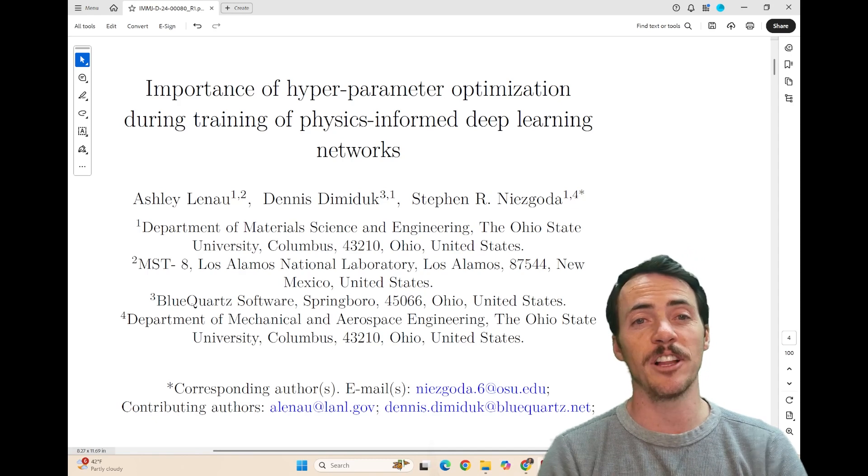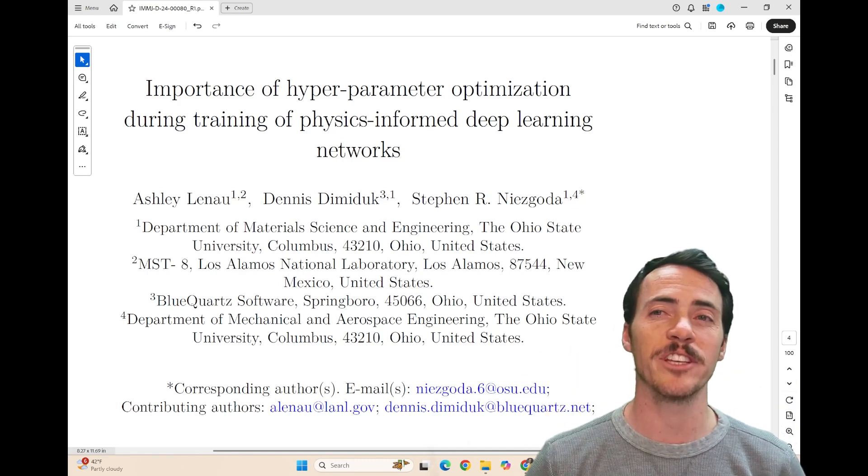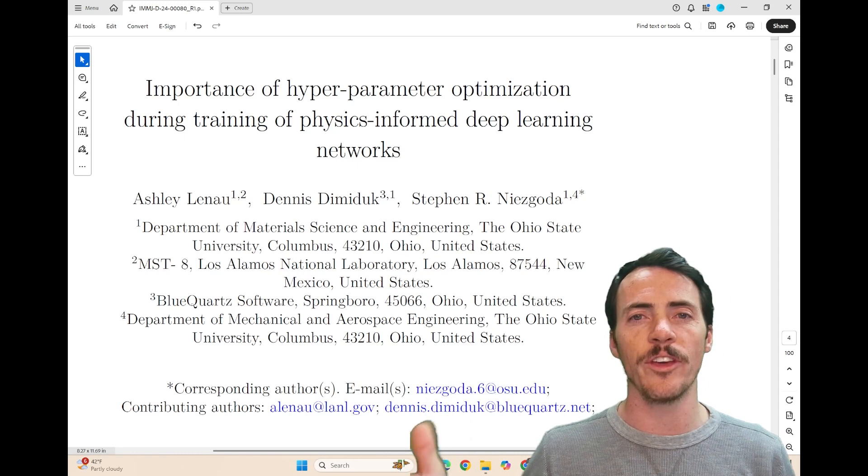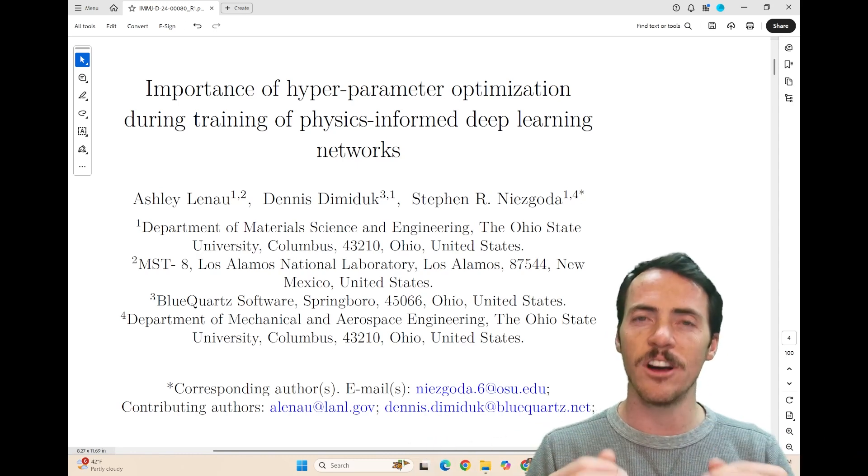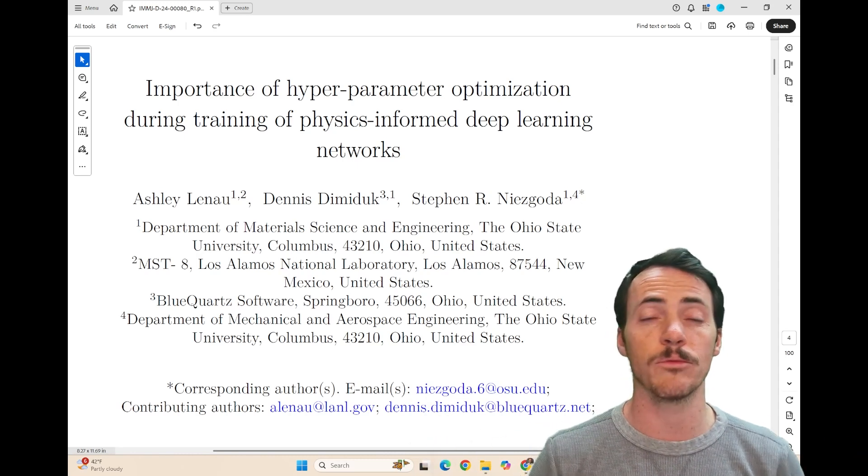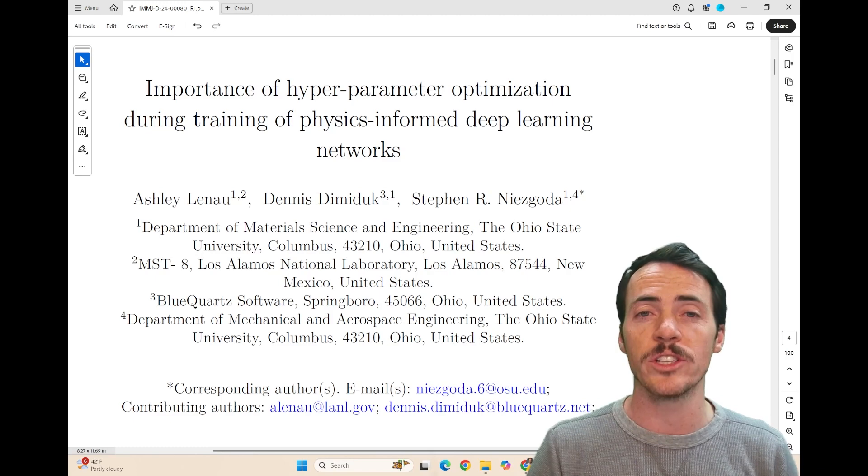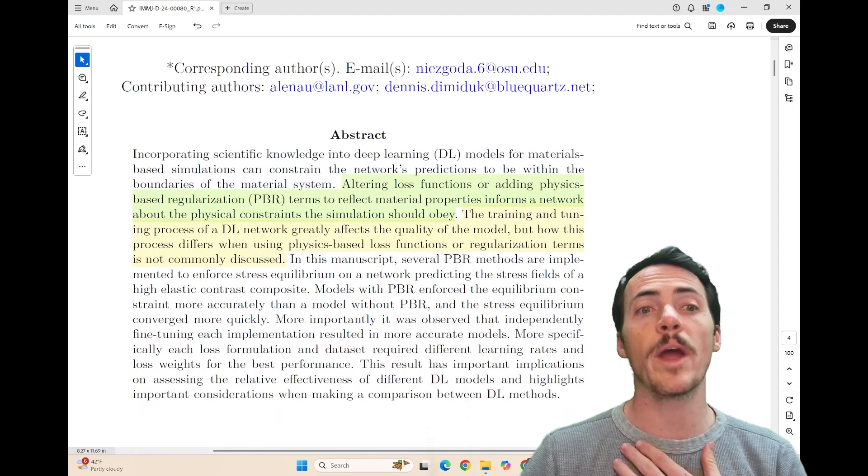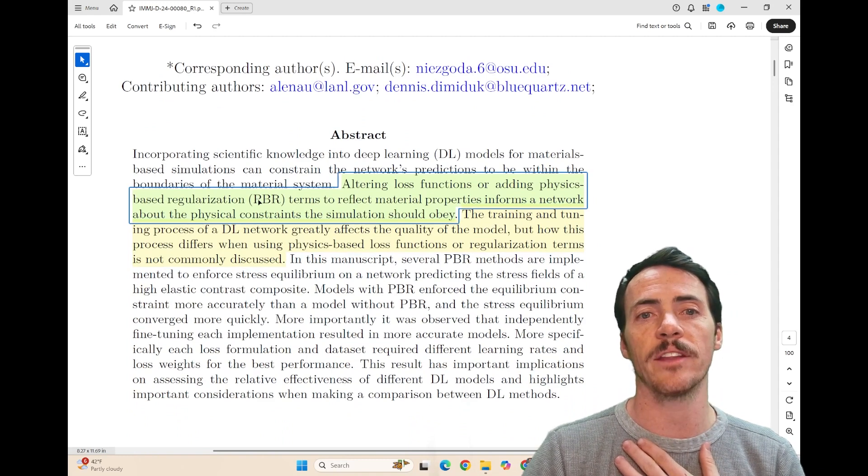Now, the point of this paper is all about physics-informed neural networks. If you're not familiar with those, essentially what these are is that instead of letting the loss function be any old thing, we're going to put constraints on the loss function so that it better reflects reality, for example, physical equations. And in specific, what they're looking at in this paper is physics-based regularization terms that get added there.